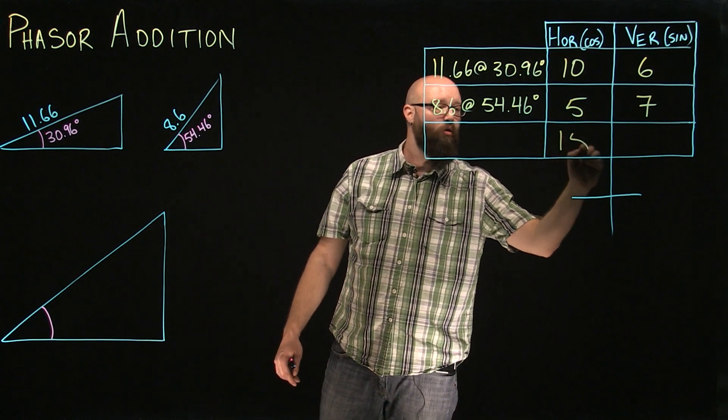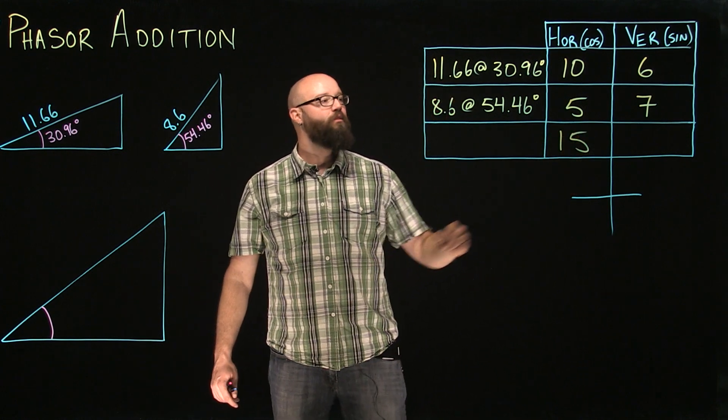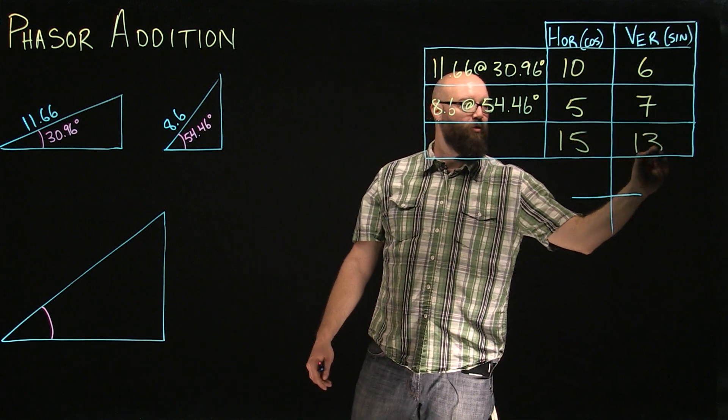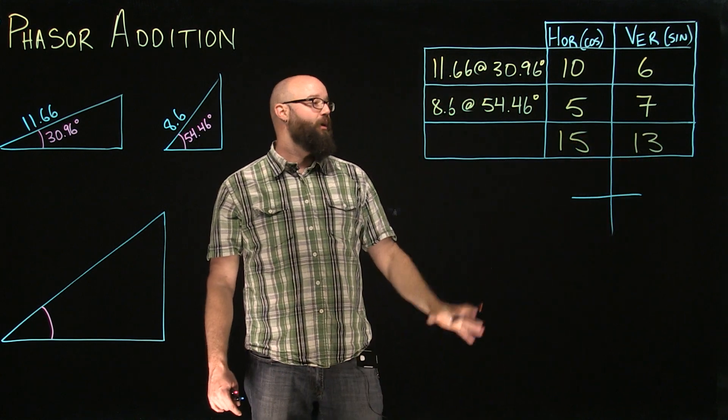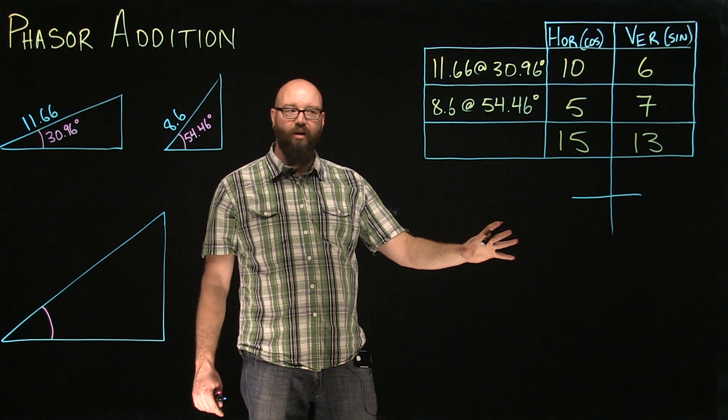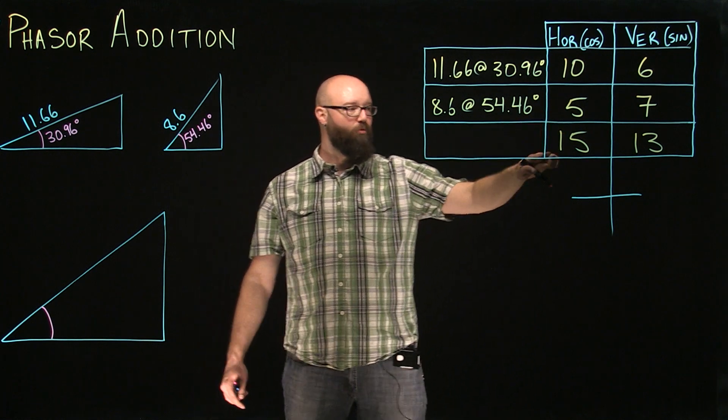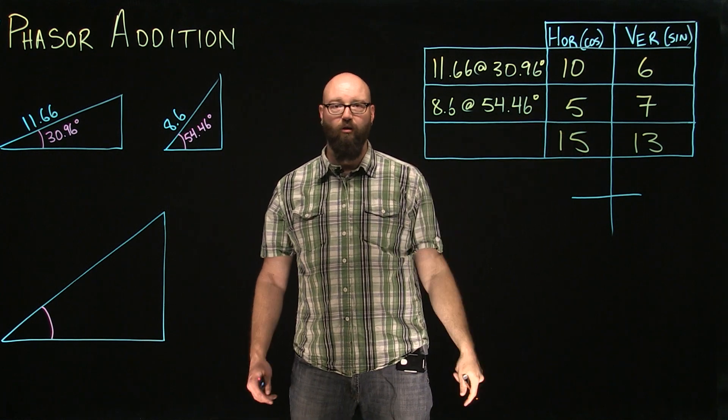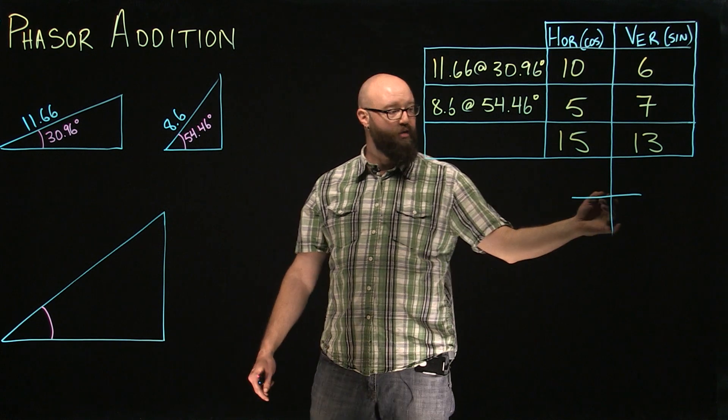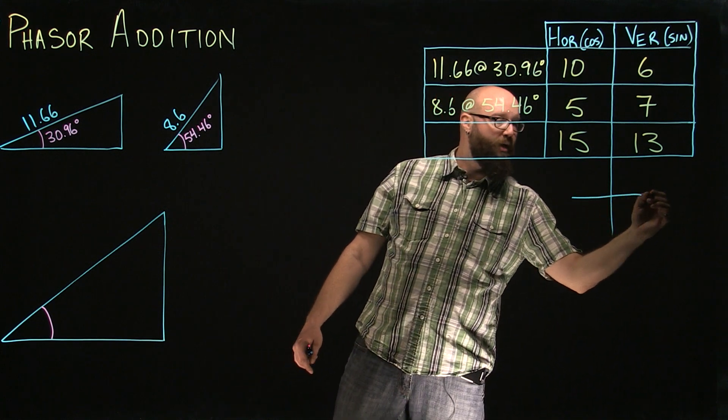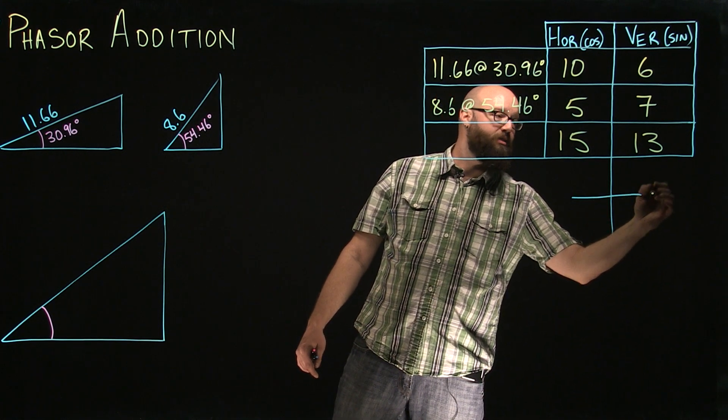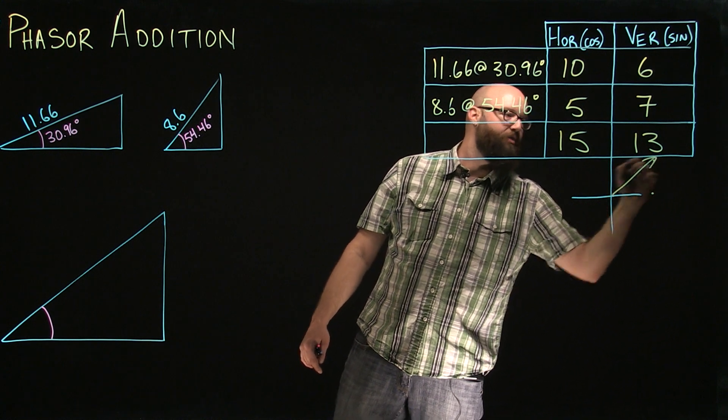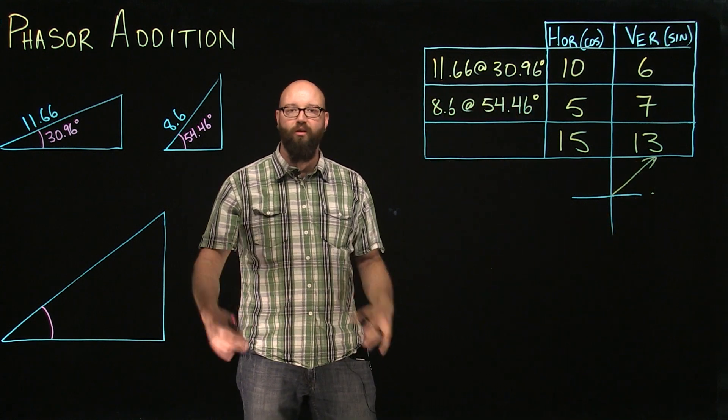So we end up with a total horizontal of 15. We end up with a total vertical of 13. Now, before we do anything, I can take a look at those and say, well, these are both positive coordinates when I look at my Cartesian plane. I know that it's going to be somewhere over here and somewhere up here. This gives me an idea that my resultant phasor should be somewhere in that quadrant.